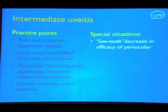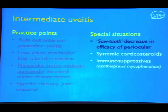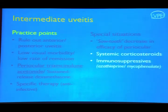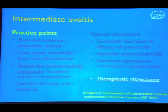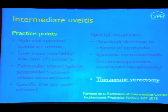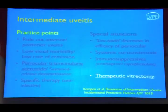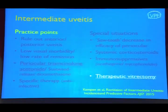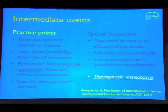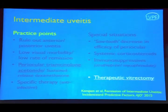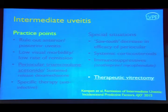Periocular corticosteroids have a saw-tooth decrease in efficacy with multiple injections. In severe cases, there is a role for systemic corticosteroids and immunosuppressives — azathioprine is most commonly used in intermediate uveitis. Importantly, according to a paper published in 2015, the only treatment that actually decreases the rate of recurrences in intermediate uveitis is therapeutic vitrectomy.